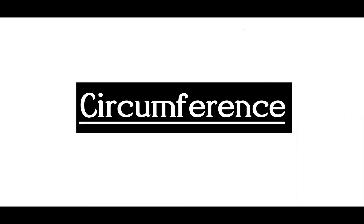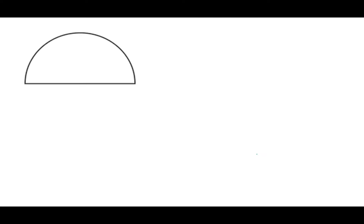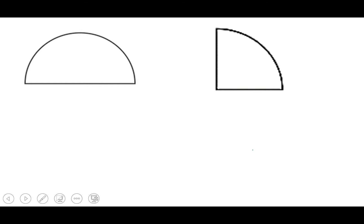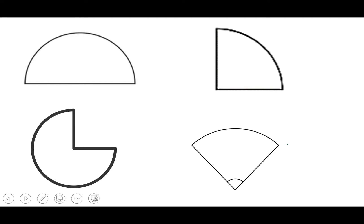Right now let's talk about circumference so we can find the perimeter of shapes like a semicircle, a quadrant, and three quarters of a circle. After we have understood circumference very well, we will be able to find the perimeter of a semicircle, a quadrant, and three quarters of a circle.